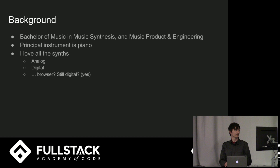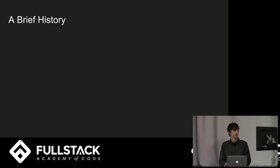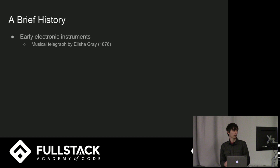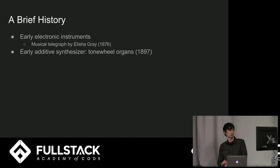So a brief history of music synthesis. You can trace electronic instruments all the way back to the 1800s. Elisha Gray was from Ohio and he created a musical telegraph — so if you ever wanted to listen to Morse code for fun, you could do that. He connected an amplifier and everything to it. Other early synthesizers were tone wheel organs, which kind of exploded. A lot of people think of church organs as the very first synthesizers.